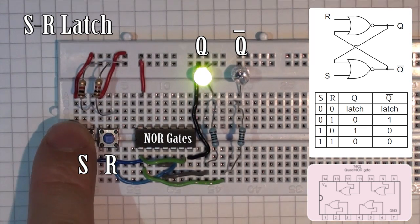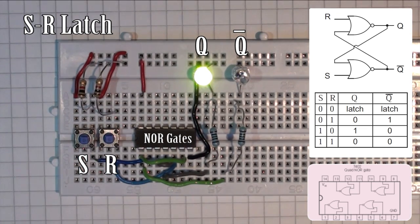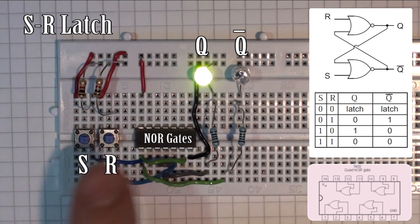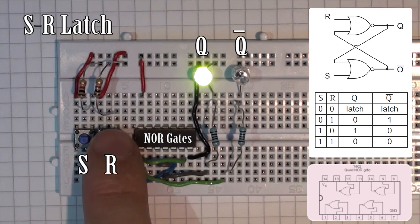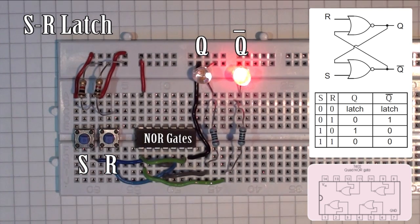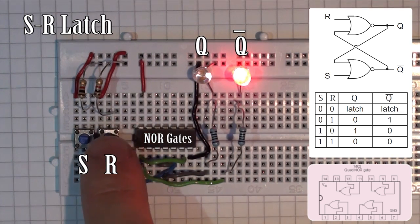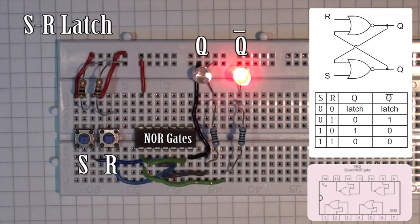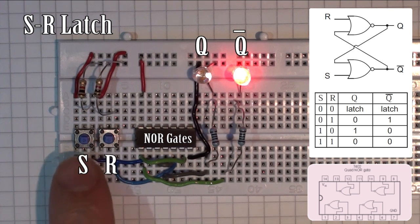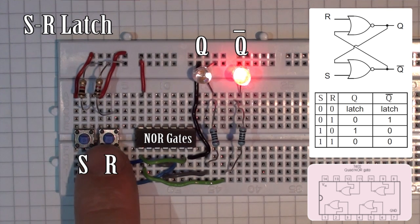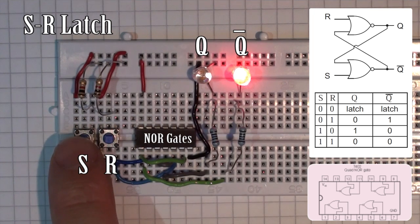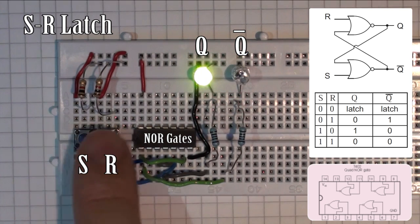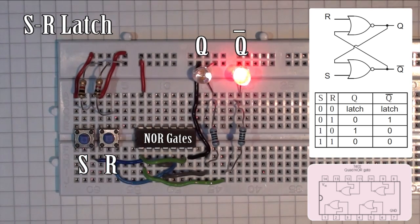So when I press the first switch, it's the S input and you'll see that we have no effect on the output, that Q remains lit. When I press the R switch, you can see that the output now goes to Q bar is high and Q is low. And this is the effect of resetting the flip-flop. So the right hand side is reset and the left hand side is set. So set sets the output green, reset sets the output red.